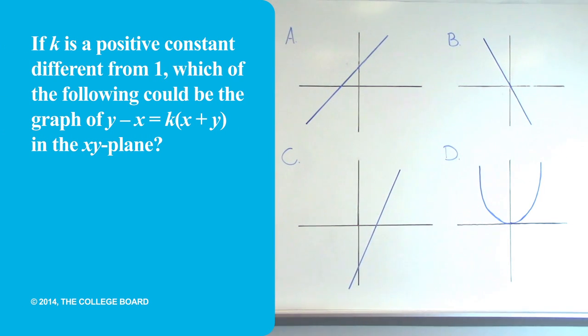If k is a positive constant different from one, then which of the following could be the graph of y minus x is equal to k times the quantity x plus y in the xy plane.